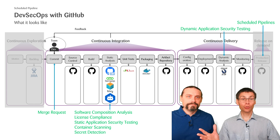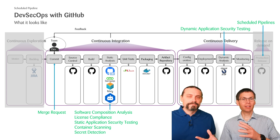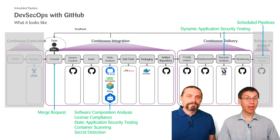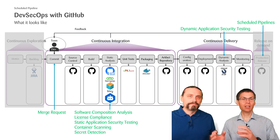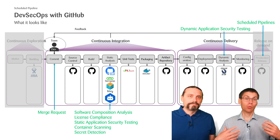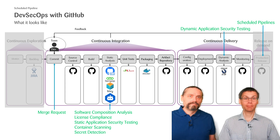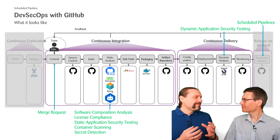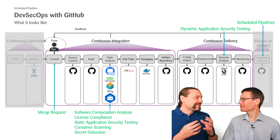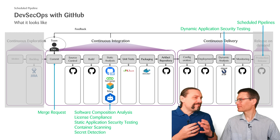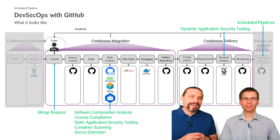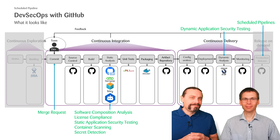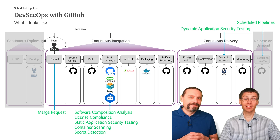Make sure that you check back the other episodes of this video series if you need more details. So what are our recommendations when it comes to building a DevSecOps pipeline with GitHub?